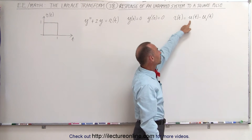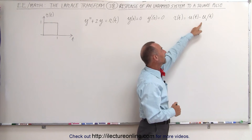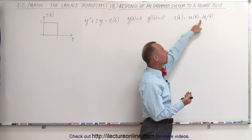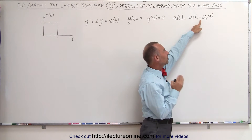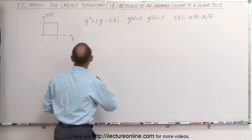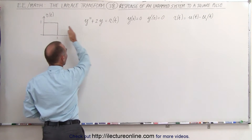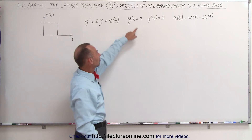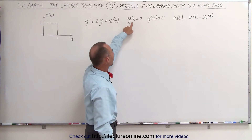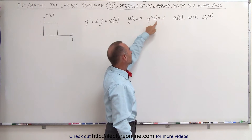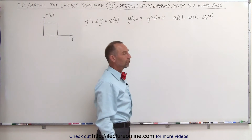The square wave starts at t equals zero with a step function, and then after one second has elapsed you subtract the step function at t equals one, so that it is zero afterwards. This is the result of that particular input. Notice that the initial conditions of the function at zero is zero and of the first derivative is also equal to zero.